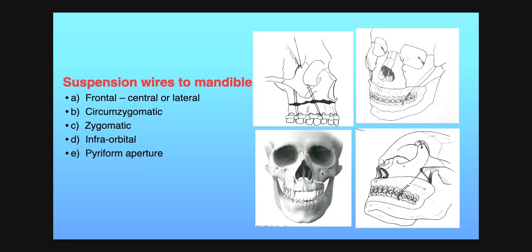These pictures are showing suspension wiring of the mandible, most commonly employed in case of LeFort fracture to sandwich the maxilla between the mandible and the skull. There are various types of suspension wiring: frontal, circumzygomatic, zygomatic, intraorbital, and piriform aperture suspension wiring. This shows zygomatic arch suspension wiring because the wire is hanging from the zygomatic arch. This is piriform aperture suspension wiring. This is frontal suspension wiring.